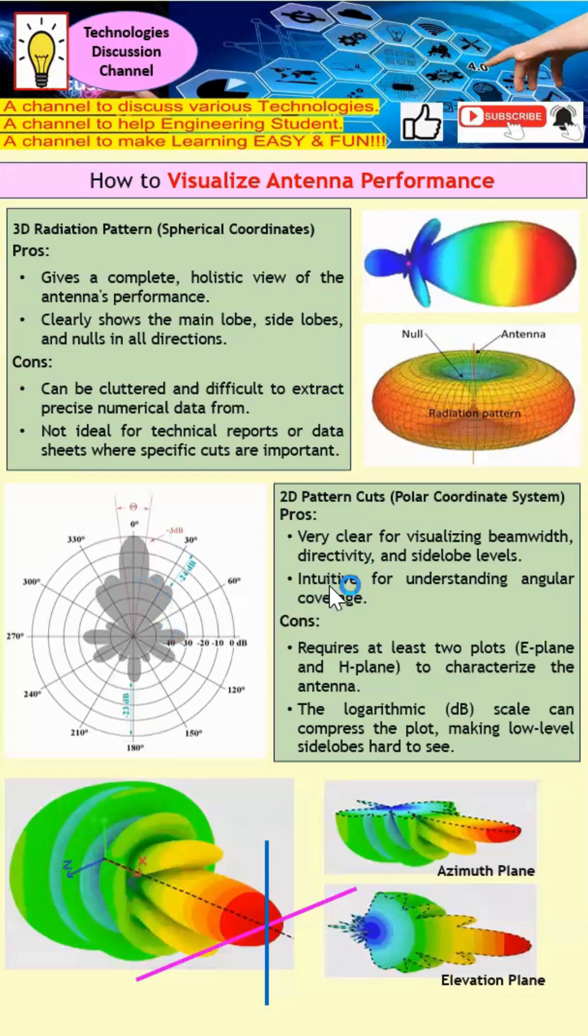This is very useful for understanding angular coverage. Coming to the negatives of this 2D polar coordinate system: it typically requires at least two plots—the azimuthal plane and elevation plane—to fully characterize the antenna. The logarithmic scale can compress the plot, making low-level sidelobes difficult to see.